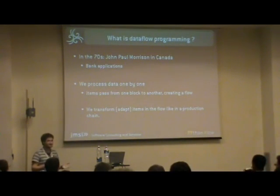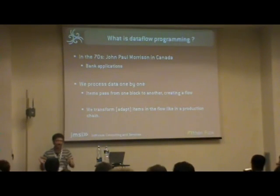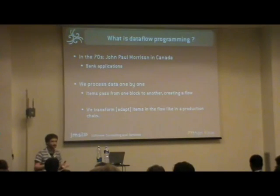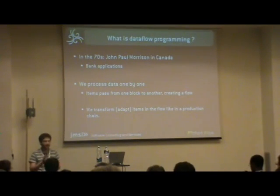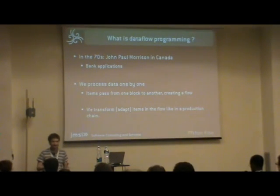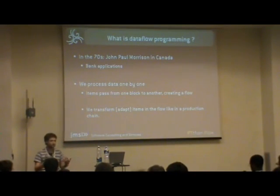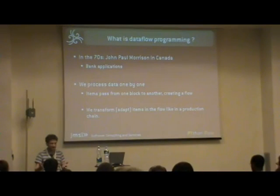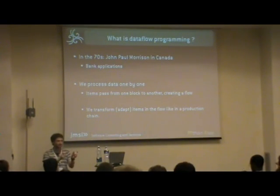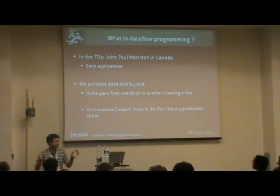So, basically, what is data flow programming? Let's go back in history to the 70s. A guy named John Paul Morrison, who wrote a book named Data Flow Processing, worked with many, many lines of data in bank applications. At that time, there wasn't a lot to do with so much data. So he invented a new way of data processing where you add blocks for processes, and you go from each block one by one.